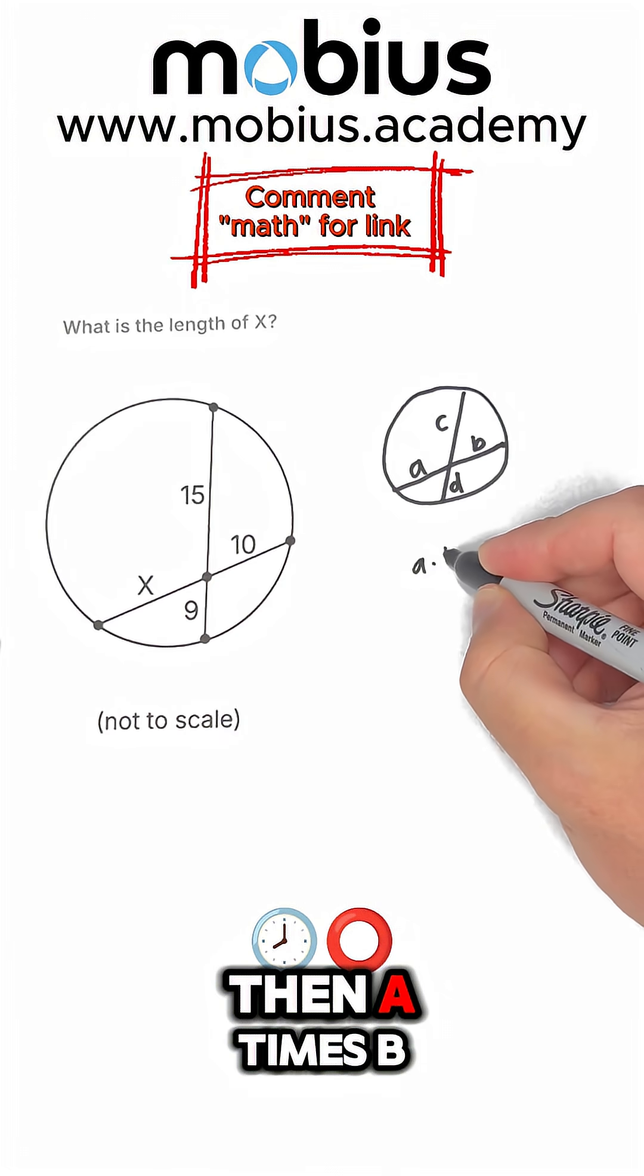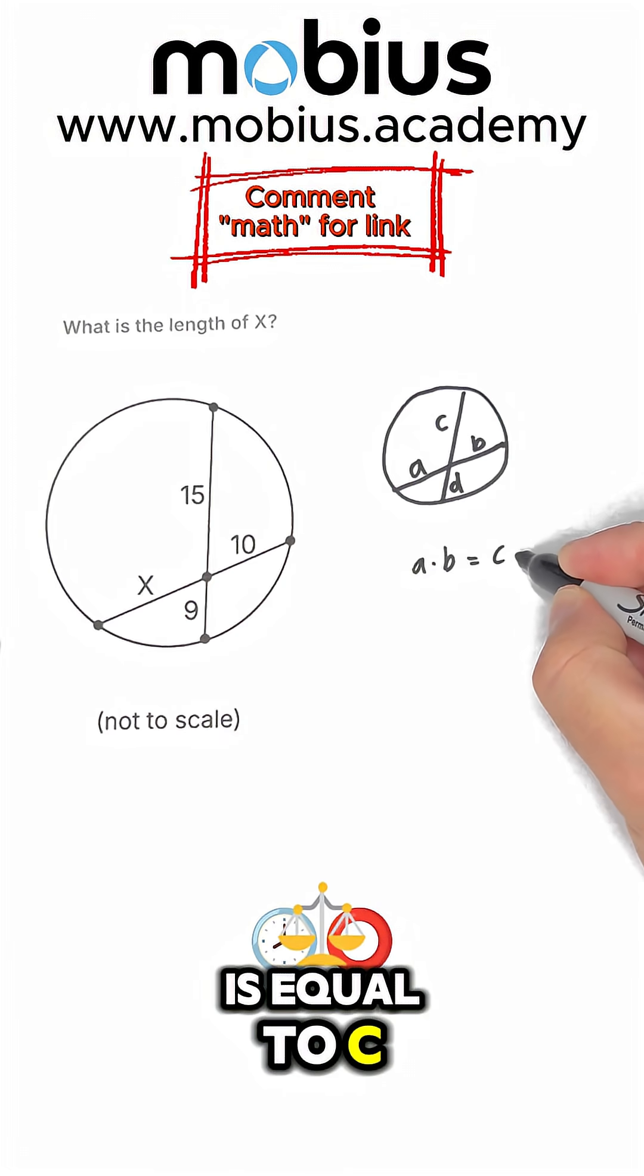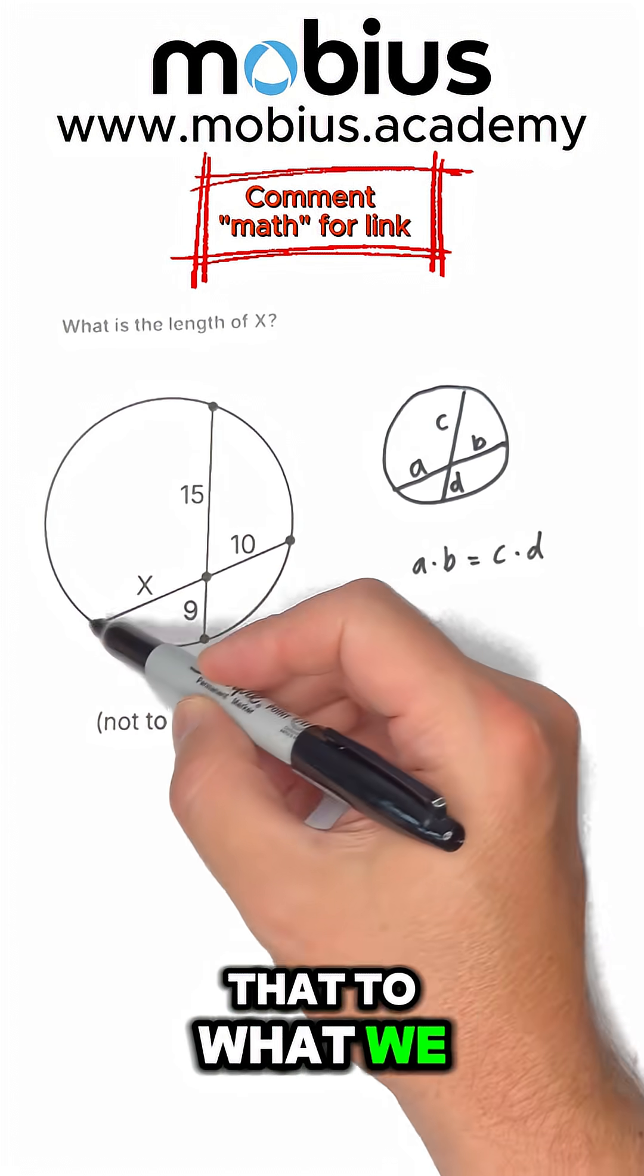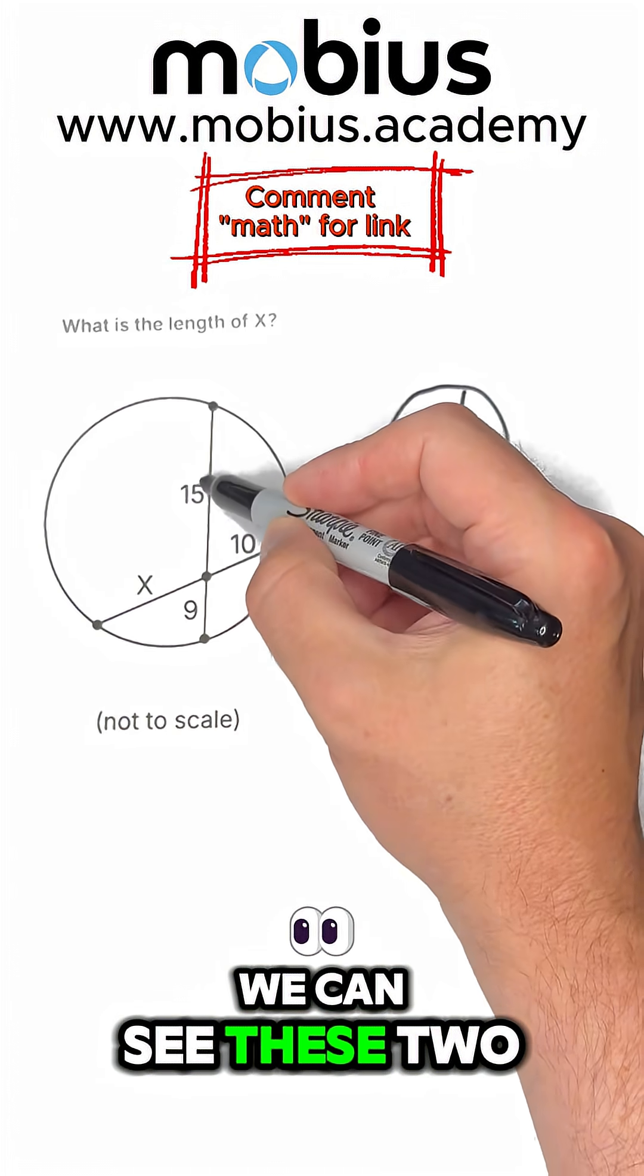then a times b is equal to c times d for all circles. So if we apply that to what we have here,